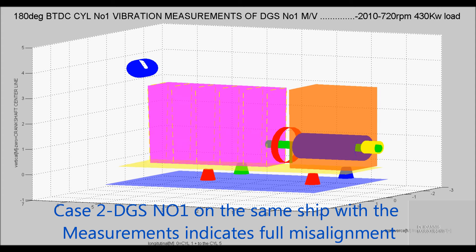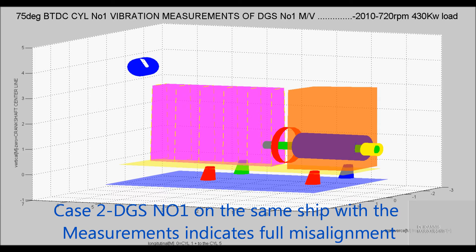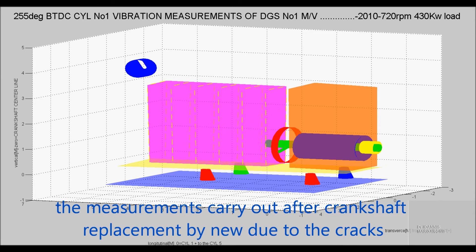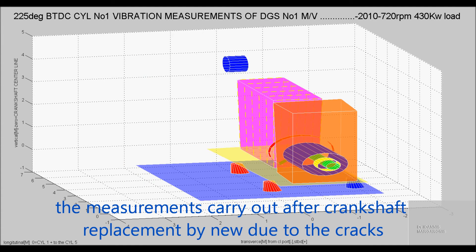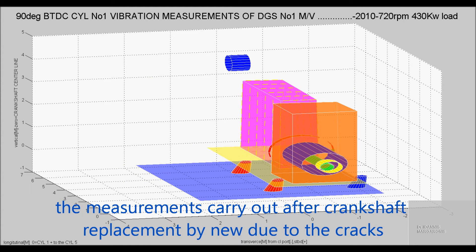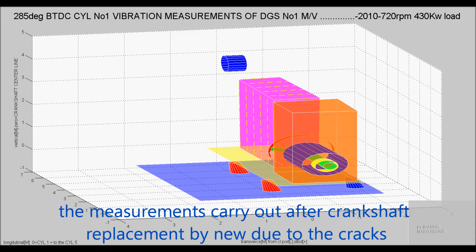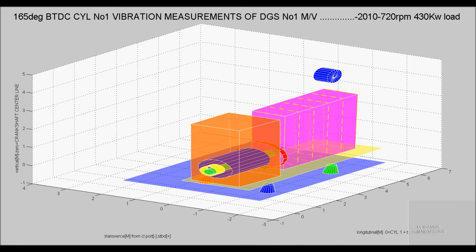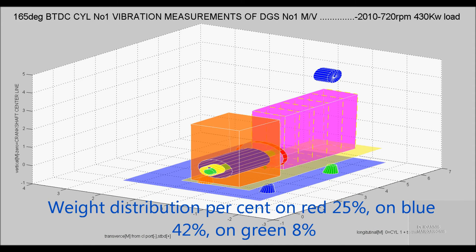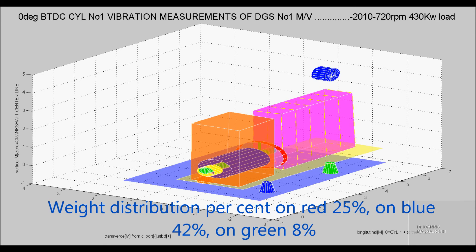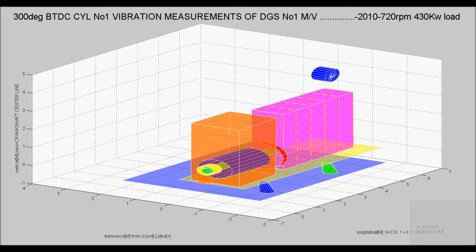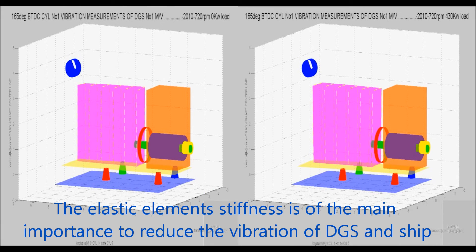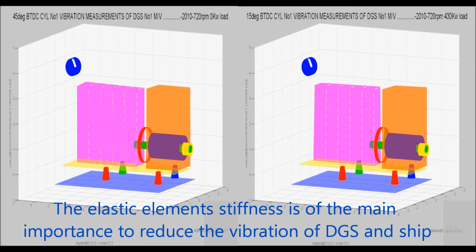Case 2: DGS number 1 on the same ship, where measurements indicate full misalignment. The measurements were carried out after crankshaft replacement with a new one due to cracks. Weight distribution shows: red mount 25%, blue mount 42%, green mount 8%.